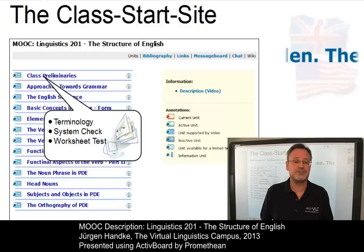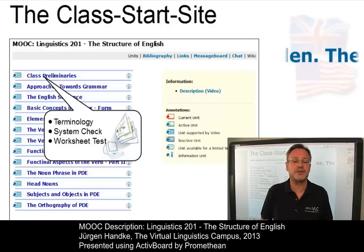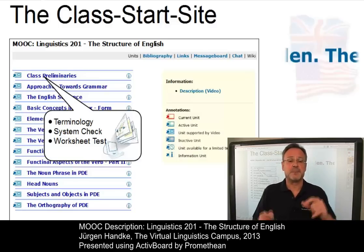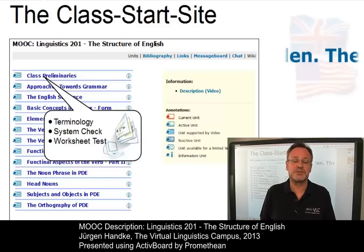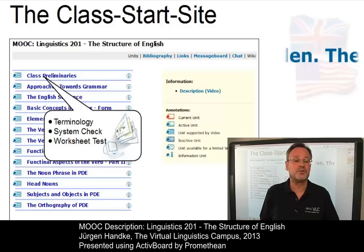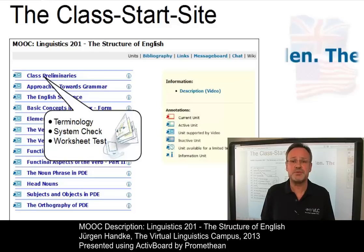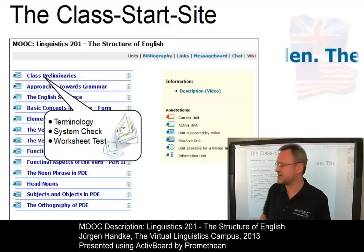The core of the class are the 13 units, where the first one, the class preliminaries, informs you about some general aspects of the class and about the principles of studying online on the Virtual Linguistics Campus. In addition, you will find helpful routines that check whether your computer is configured correctly and whether the submission of worksheets — the backbone of our testing principles — is successful. We recommend going through the class preliminaries very carefully, especially if you are a first-time user of a class on the Virtual Linguistics Campus.